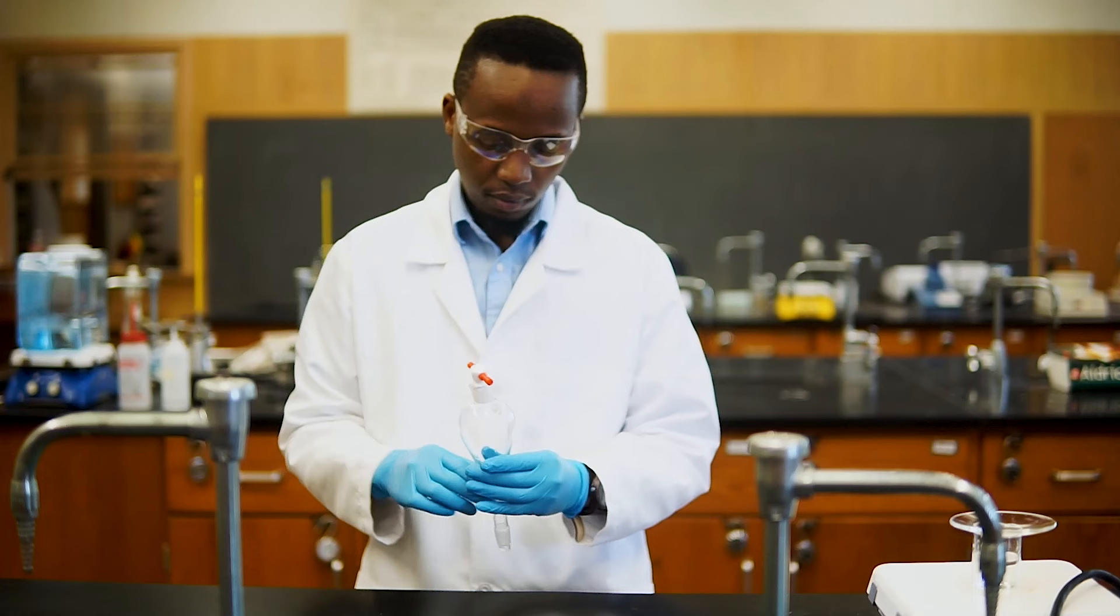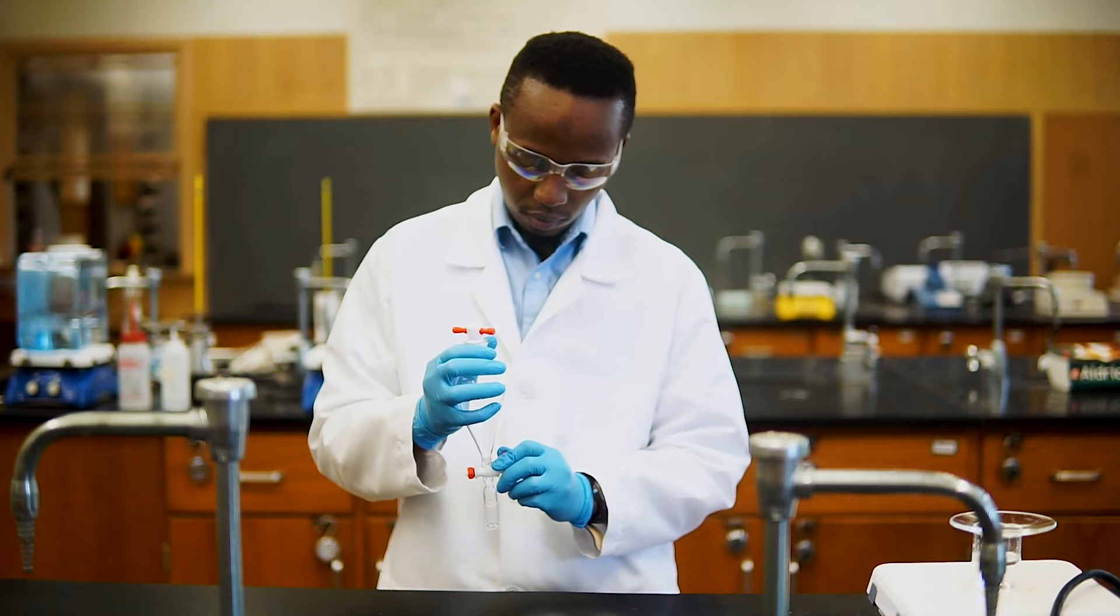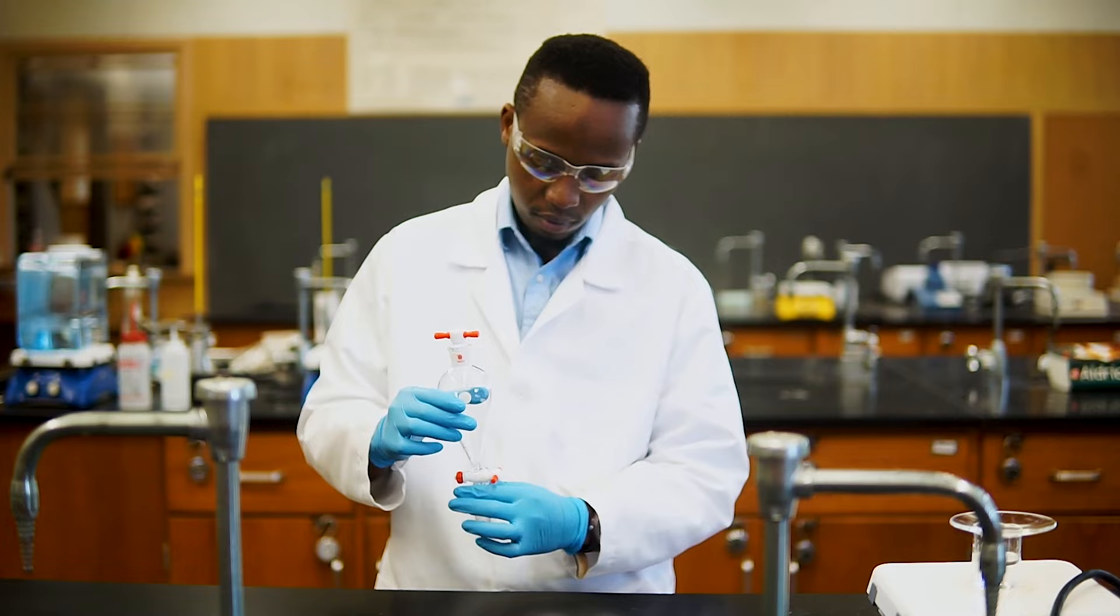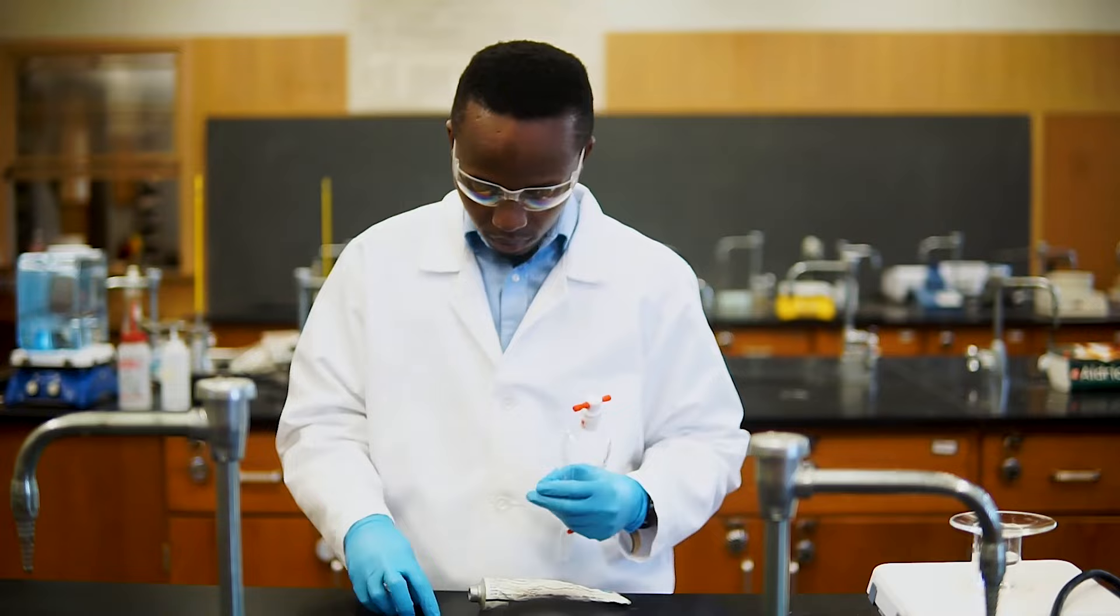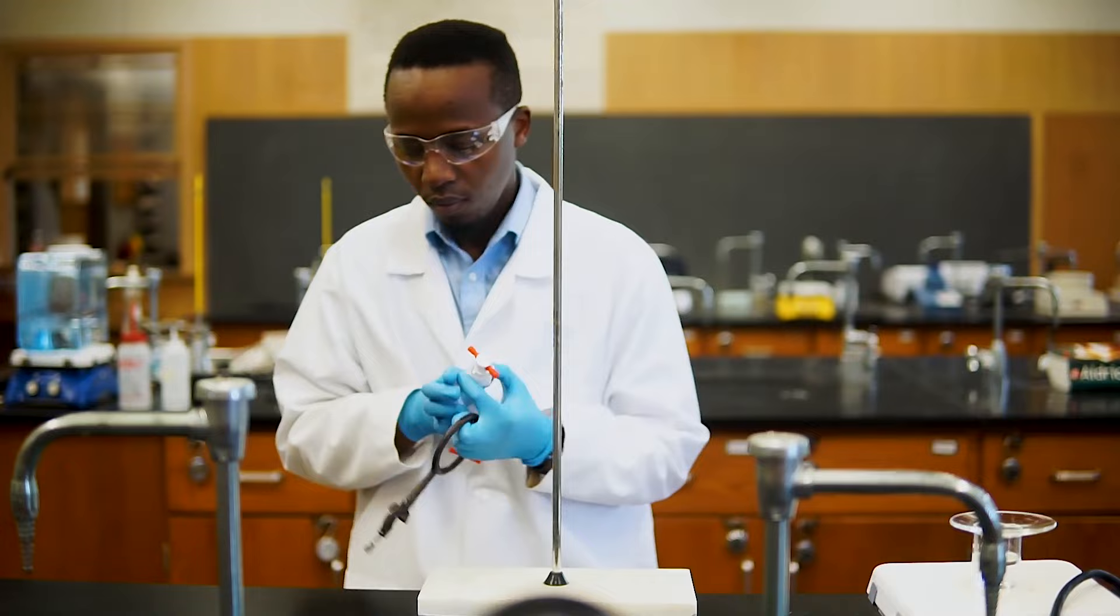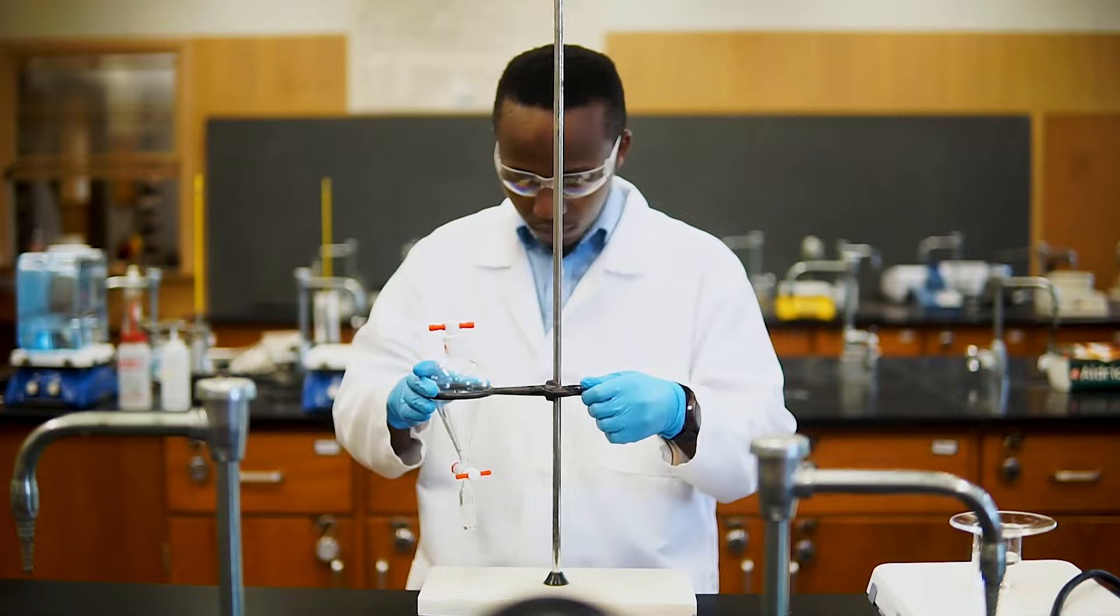Now let's get more familiar with the intricacies of the separatory funnel. As we can see here, the funnel has a stopper at the top, and a stopcock at the bottom. This middle region is where our separation will take place. To get this ready, you might have to add a little bit of grease to the stopper and or stopcock, since they tend to get stuck. To set up for the extraction, we'll start with a ring stand attached to a support like this. We'll then place our separatory funnel in the ring and make sure everything is secure.